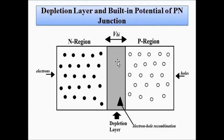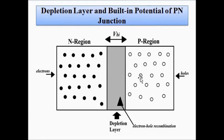When both blocks are joined together using a special fabrication technique, a region is formed that is deprived of any mobile charge carriers — neither electrons nor holes. This happens because as soon as the P and N blocks are combined, electrons and holes recombine. Holes are vacant electronic sites with a strong force of attraction for electrons, so electrons move into these vacant sites — this is called electron-hole recombination or annihilation.